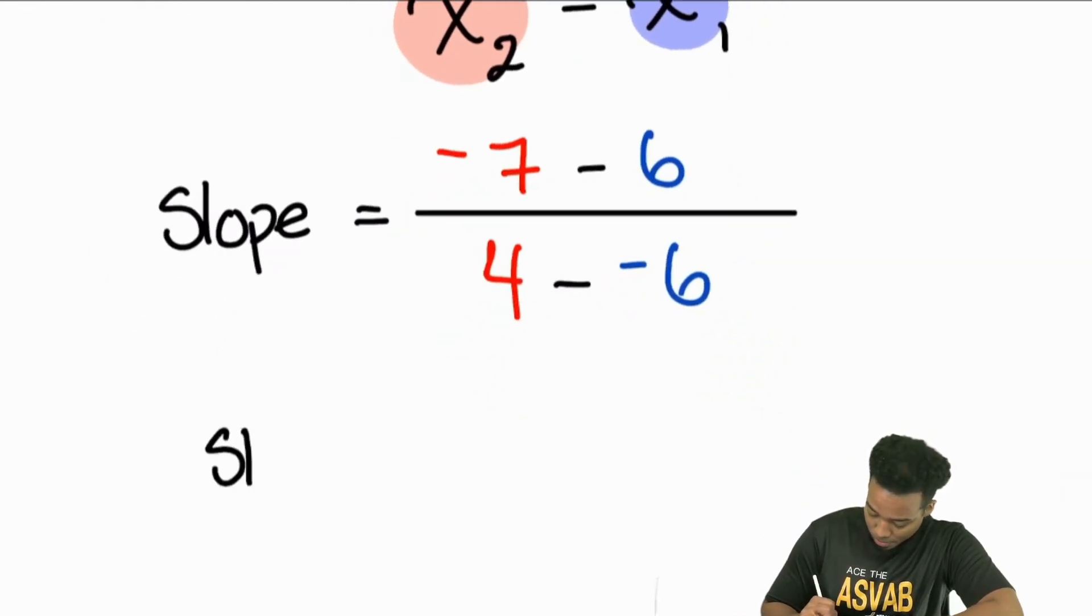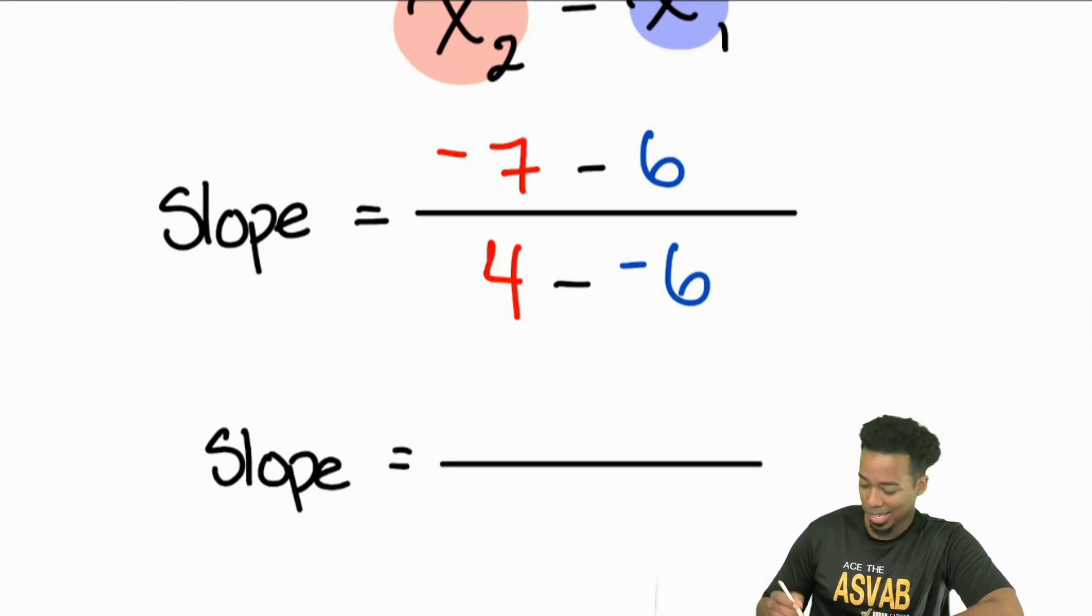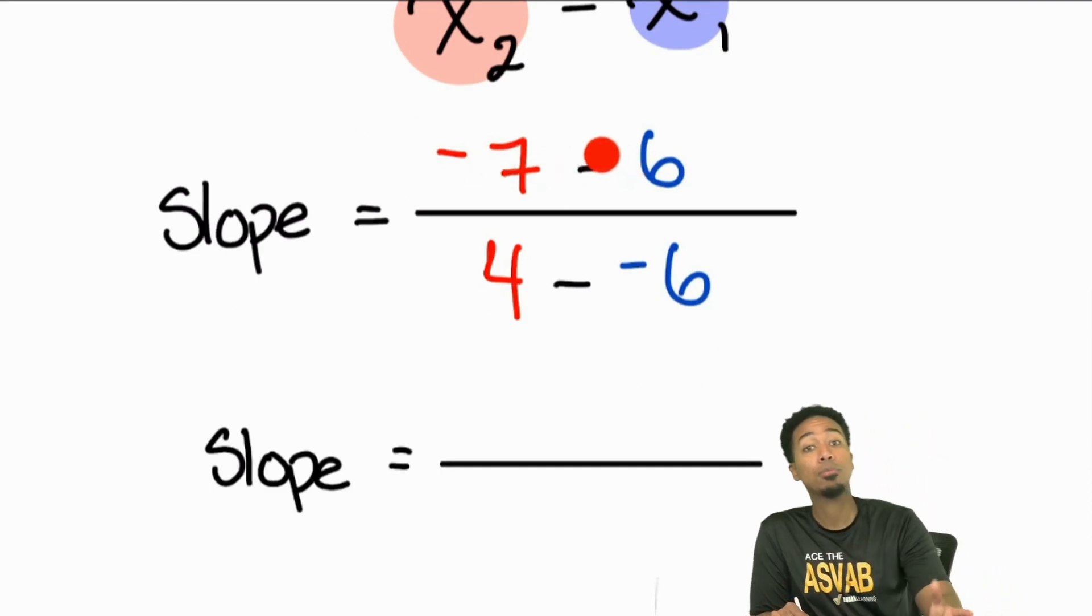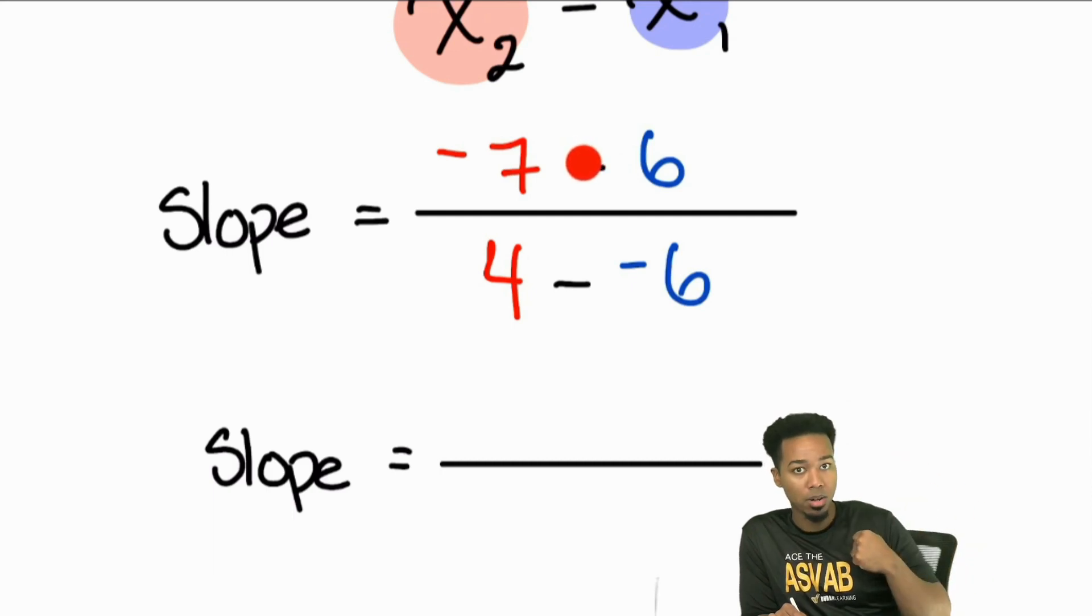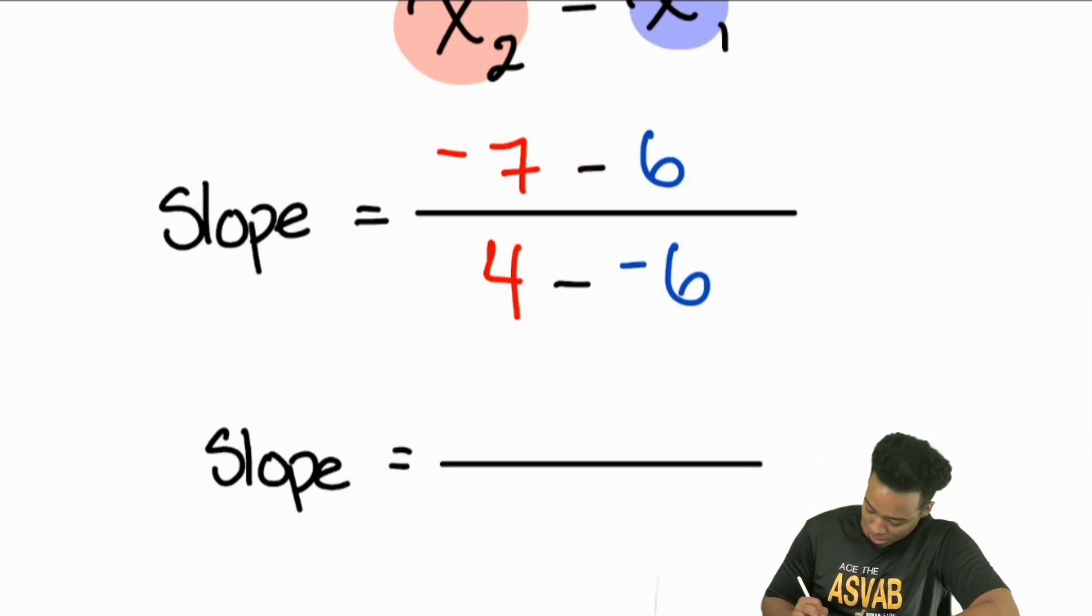My slope equals negative 7 minus 6. Let's look at the top here. Negative 7 minus 6. That's like saying, hey, I'm back 7. I'm going back 6 more. Where am I? I'm back negative. Exactly, Eros. I'm back 13. So that's going to be negative 13 up top.